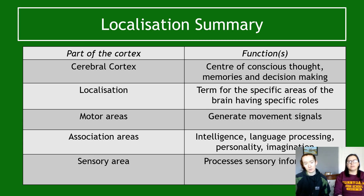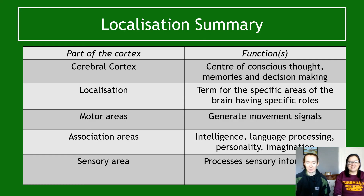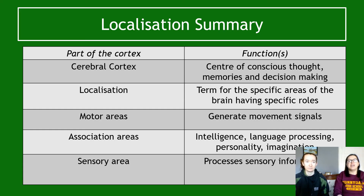You also need to know about the idea of association areas. You don't need to be able to identify them on a picture of the brain, but you do need to know that they control things like intelligence, language processing, personality, and imagination. A map of the brain isn't a wrong way to think about it either, because it is a complicated area with specific zones.